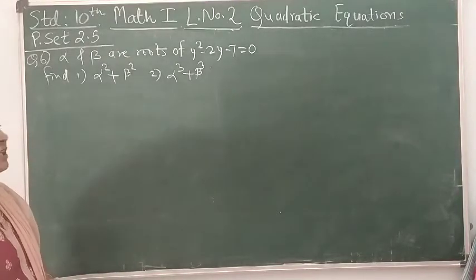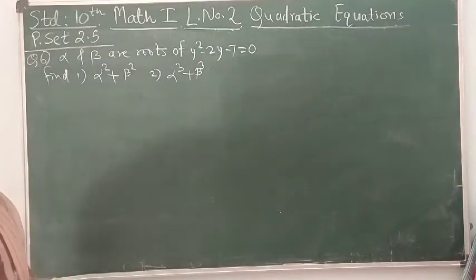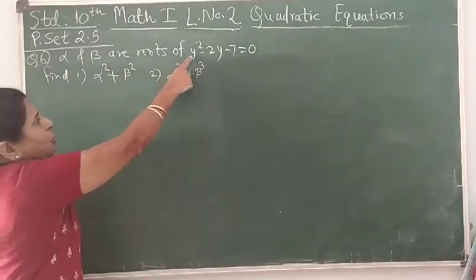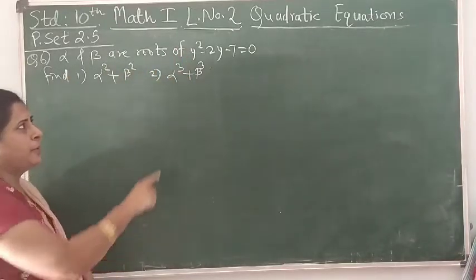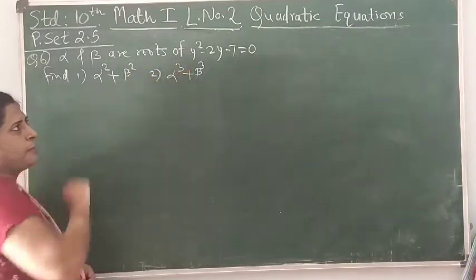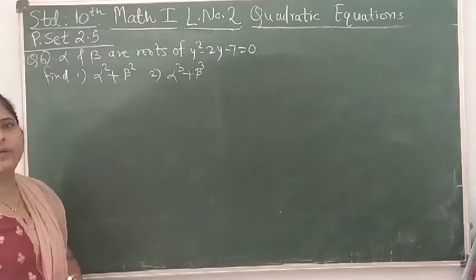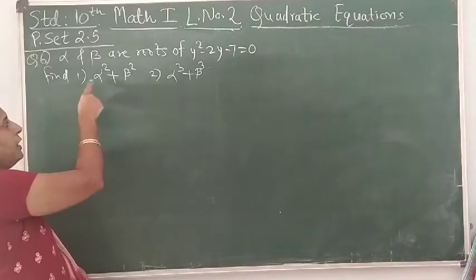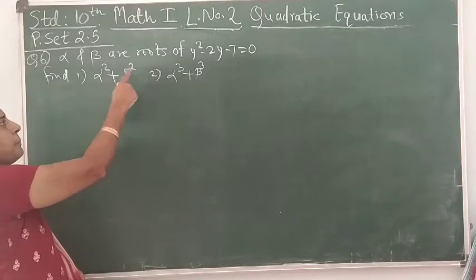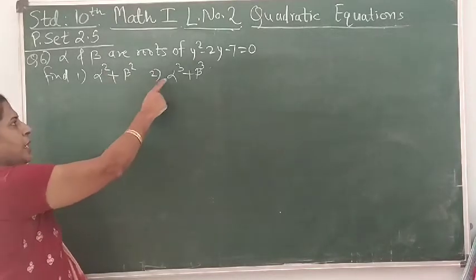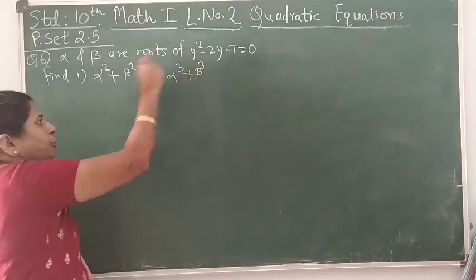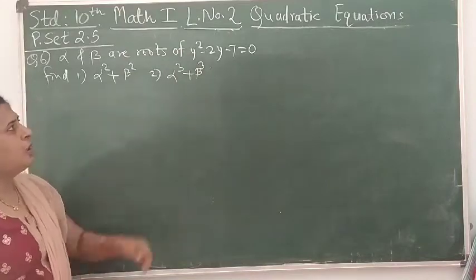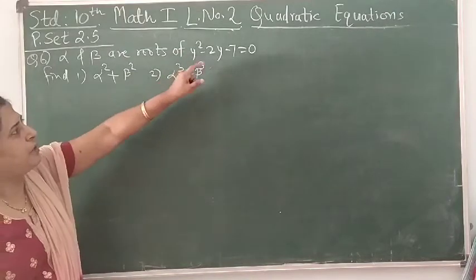What is given in the question? Alpha and beta are the roots of y² - 2y - 7 = 0. We have to find α² + β² and α³ + β³.